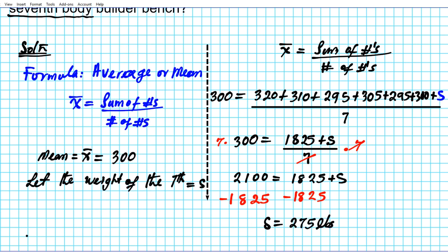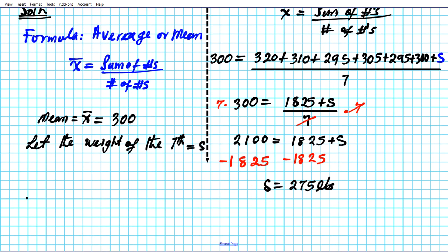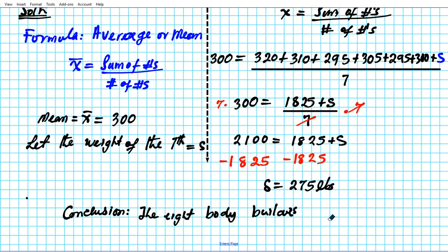So what does this answer mean? The conclusion is that the 7th bodybuilder can bench 275 pounds.